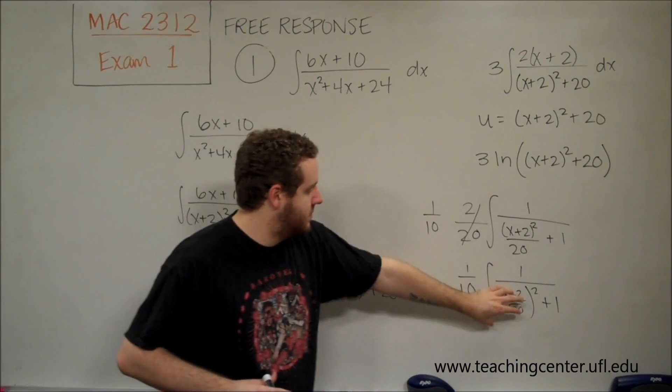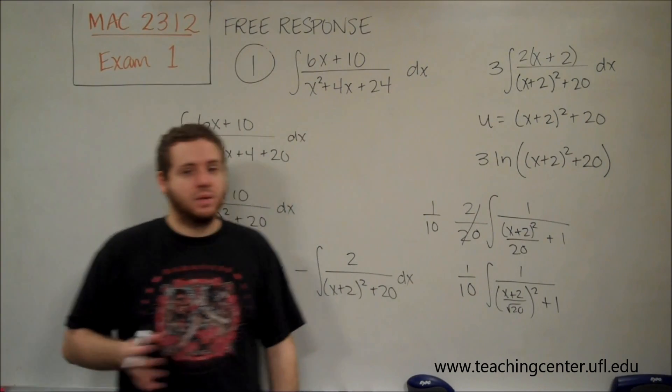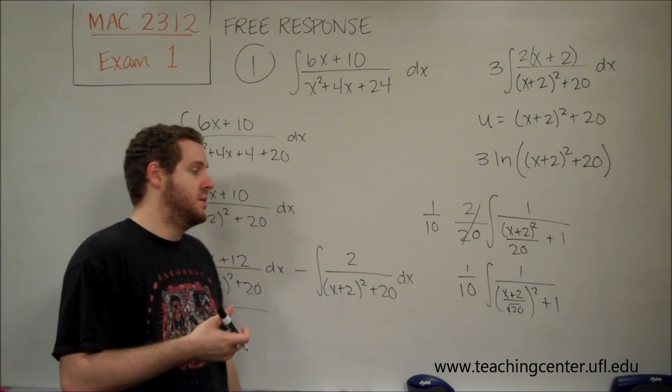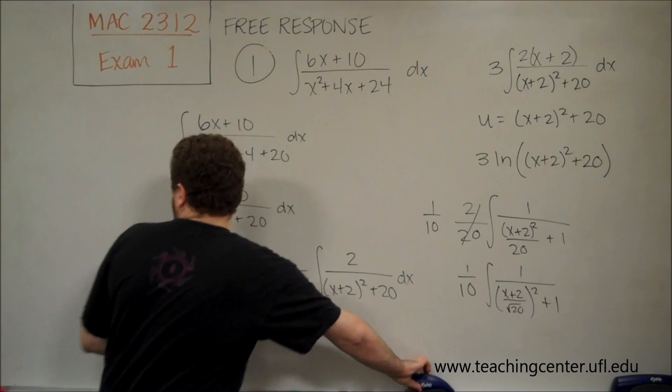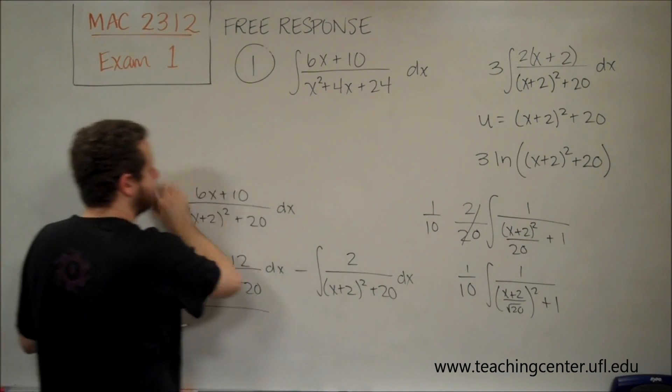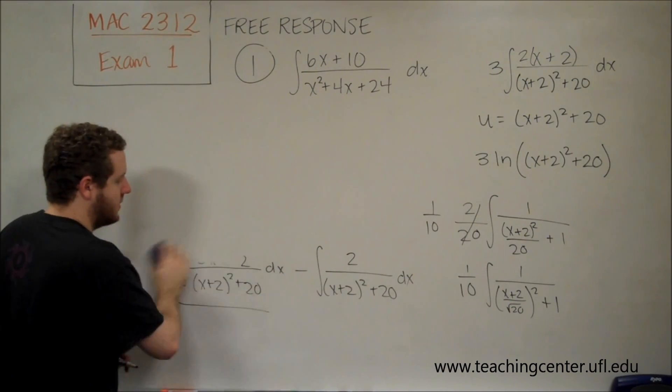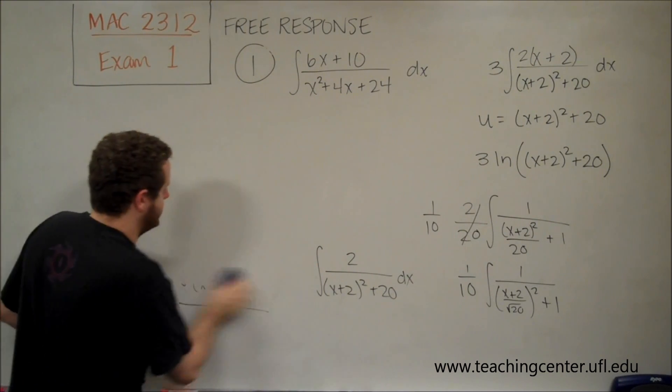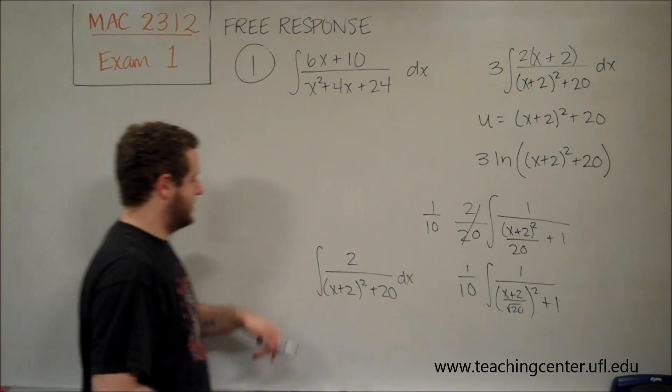is that this is going to be x plus 2 over the square root of 20 all squared plus 1. So now we just have some term squared plus 1, 1 on the numerator. This is definitely an arctangent formula.